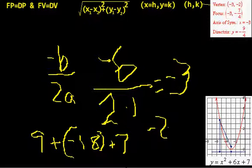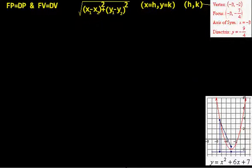So that's minus 9 plus 7, which is minus 2. So minus 3, minus 2 is the vertex. I'll write up here that h is minus 3, and k is minus 2.